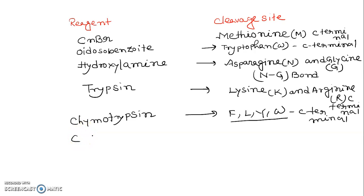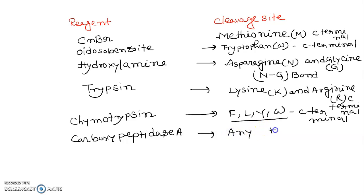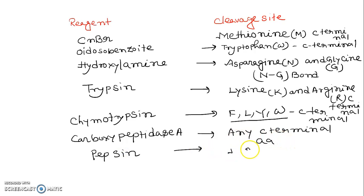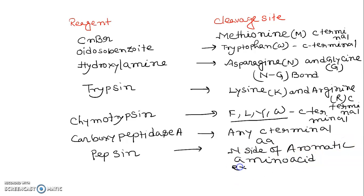Carboxypeptidase A cuts any C-terminal amino acid. Pepsin cuts inside of aromatic amino acids, except when proline, arginine, or lysine are present. If proline is present in between, pepsin will not cut at that site.